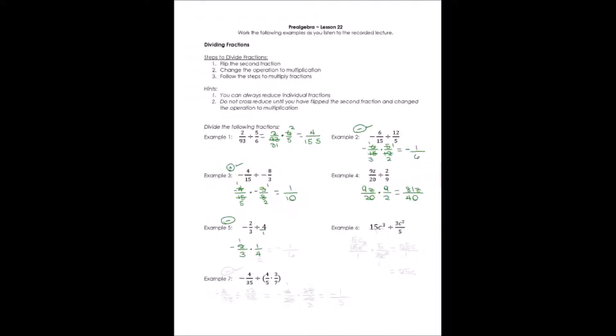I can reduce here, cross-reduce the 2s. 2 will go into 2 and 4. And now I'm going to multiply 1 times 1, 3 times 2, negative 1/6.